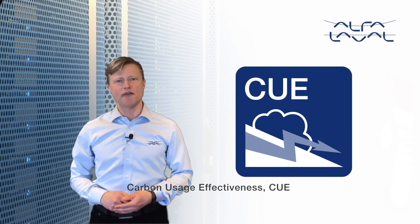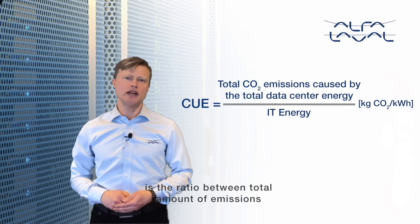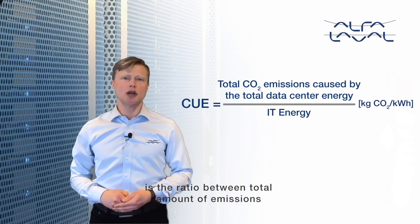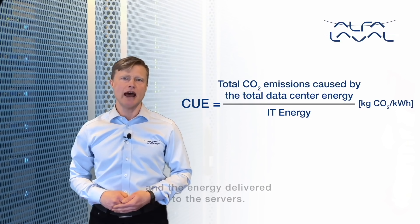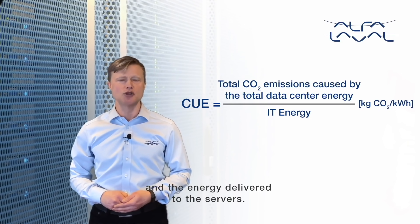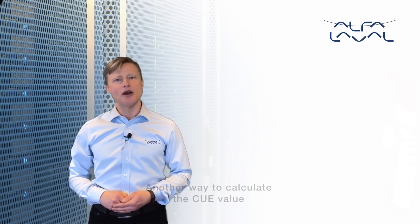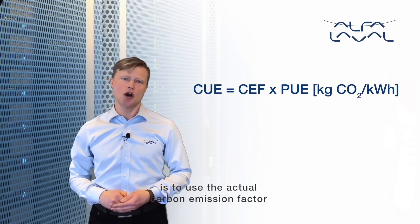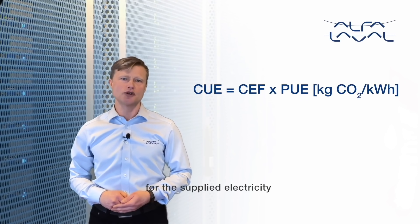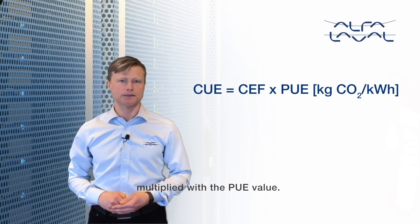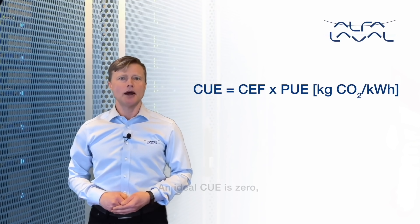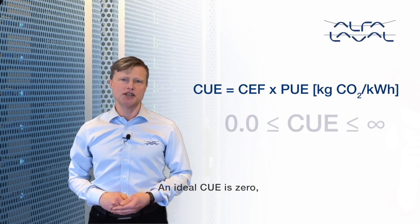Carbon Usage Effectiveness (CUE) is the ratio between the total amount of emissions caused by the total energy supplied to the data center and the energy delivered to the servers. Another way to calculate the CUE value is to use the actual carbon emission factor for the supplied electricity multiplied by the PUE value.